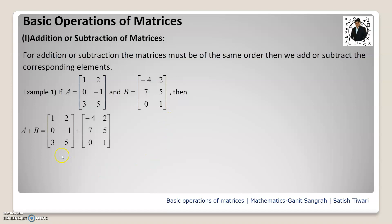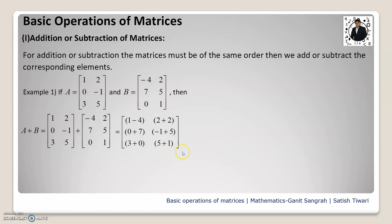Let us see the addition first. If we do the addition of these two matrices, we write A plus B, and we add the corresponding elements. So 1 is added to minus 4, 2 is added to 2, 0 is added to 7, minus 1 is added to 5, 3 is added to 0, and 5 is added to 1. The answer is: 1 plus minus 4 equals minus 3, 2 plus 2 equals 4, 0 plus 7 equals 7, minus 1 plus 5 equals 4, 3 plus 0 equals 3, and 5 plus 1 equals 6.